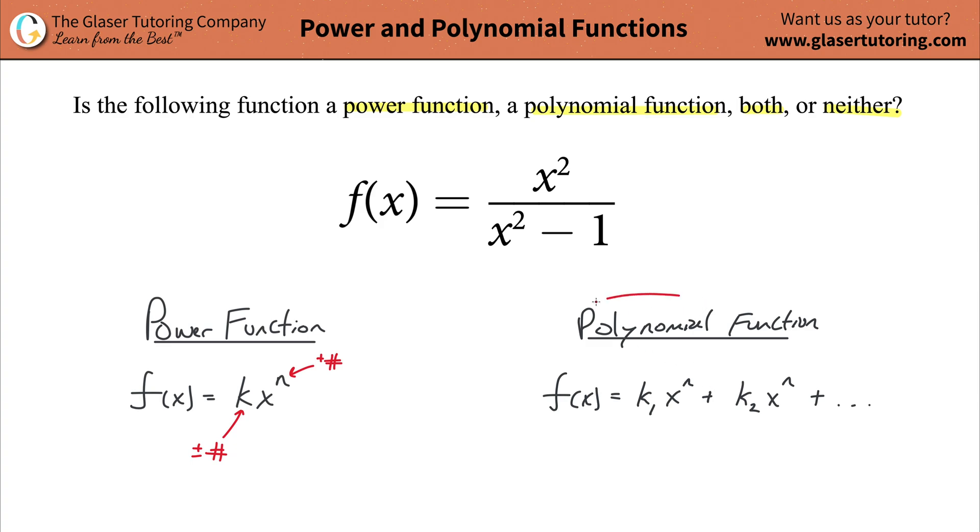The only difference, though, is that in a polynomial function we can have a constant term at the end, but we do need something that looks like a power function in there. We can't just have a constant. We can have a power function basically plus a constant. That works.